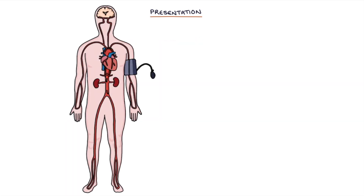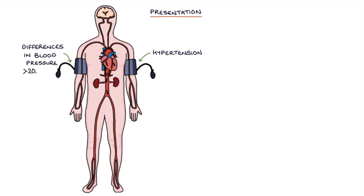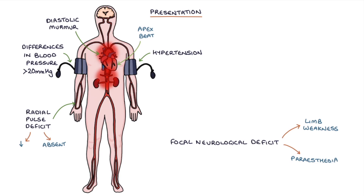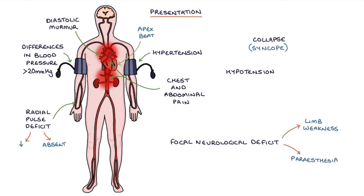Other features that may suggest aortic dissection include hypertension or a raised blood pressure, differences in blood pressure between the arms of more than 20 mmHg, and a radial pulse deficit, where the radial pulse in one arm is decreased or absent and does not match the apex beat. Also: a diastolic murmur, focal neurological deficits such as limb weakness or paresthesia, chest and abdominal pain occurring together, collapse (syncope), and hypotension, which is a late sign as the dissection progresses.